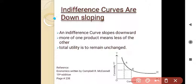Indifference curves are downsloping. An indifference curve slopes downward because more of one product means less of the other. This is the main reason for the downsloping of an indifference curve. In exam discussions, this is frequently asked — the answer is that more of one product means less of the other, as total utility is to remain unchanged.